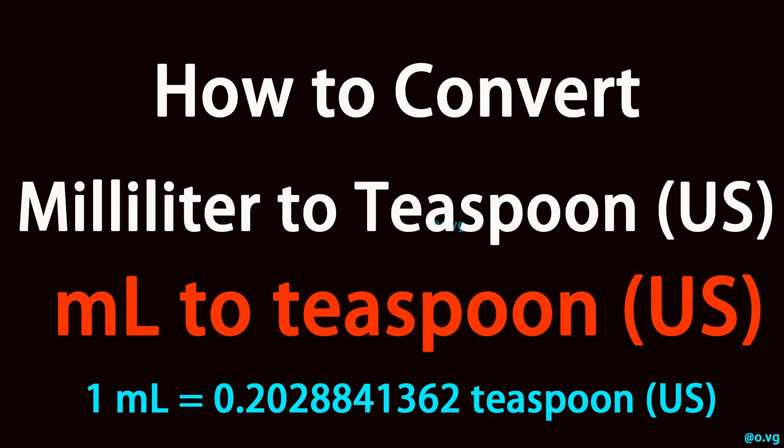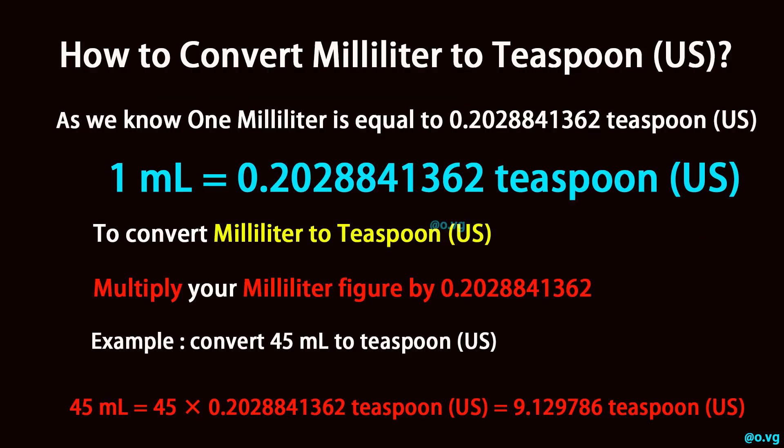How to convert milliliter to teaspoon, U.S. As we know, one milliliter is equal to 0.2028841362 teaspoon, U.S. To convert milliliter to teaspoon, U.S., multiply your milliliter figure by 0.2028841362.